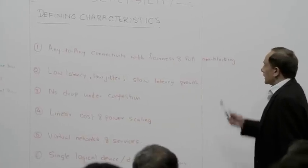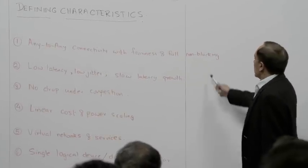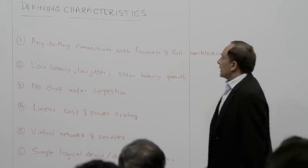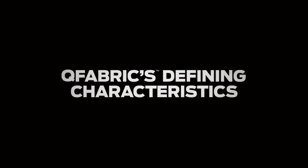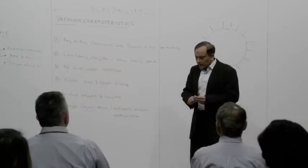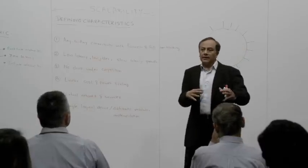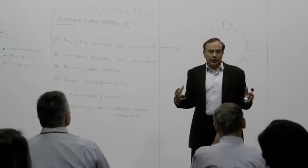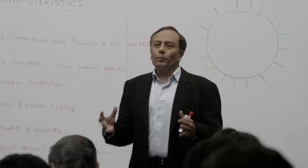So what are the properties or the characteristics? Number one is any-to-any connectivity with fairness and full non-blocking. What any-to-any connectivity means is that any set of interfaces can talk to any other set of interfaces with no restrictions and no pre-planning.